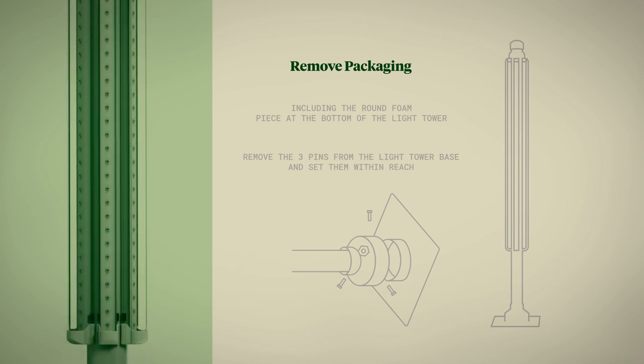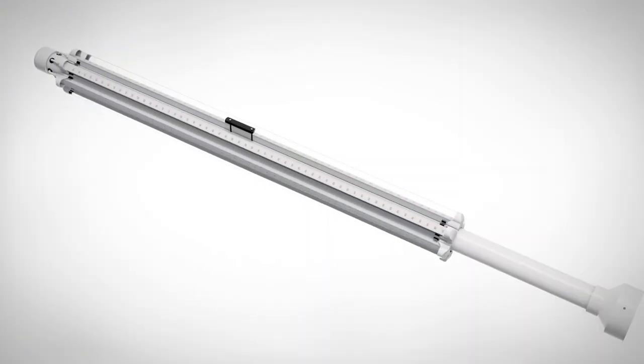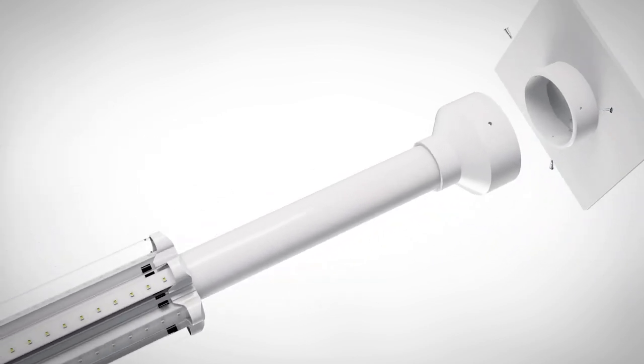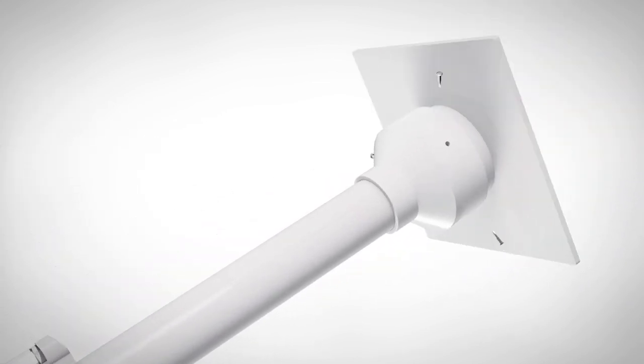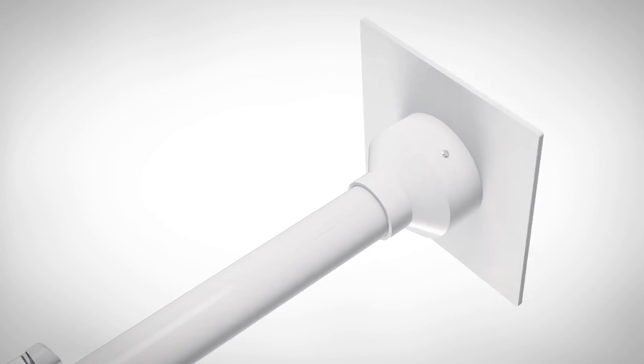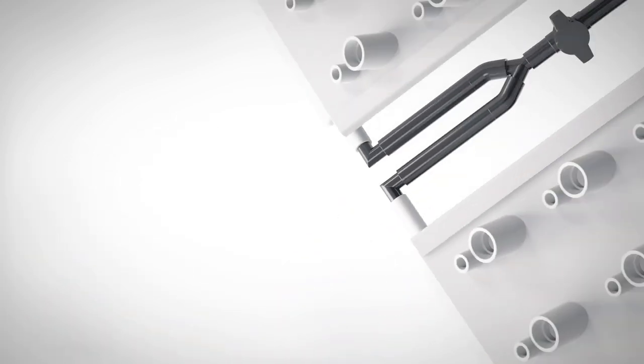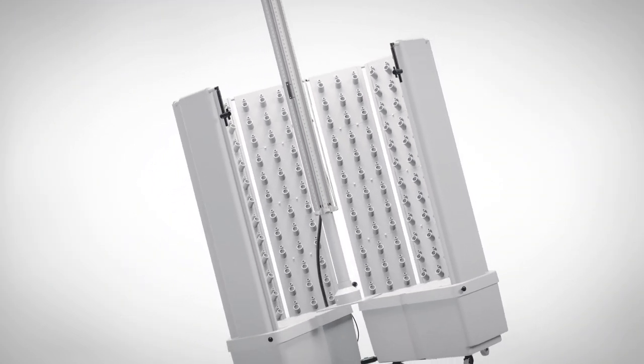While the light tower is laying on the ground, lift up the bottom of the light tower and slip on the base. Turn until one side is flat on the ground and the pinholes align. Insert the pin securely and repeat the process for the remaining two pins. Grab the light tower by the handle and stand it up.